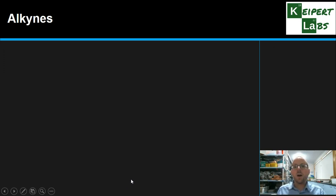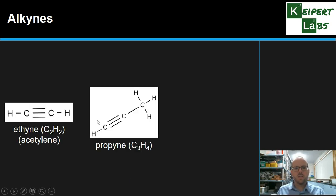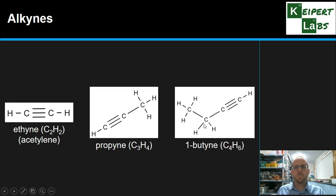Now we're going to look at alkynes. So we started with single bonds, double bonds, so now we see triple bonds. We've got ethyne, propyne, and 1-butyne. You can see the existence of this carbon-carbon triple bond here.